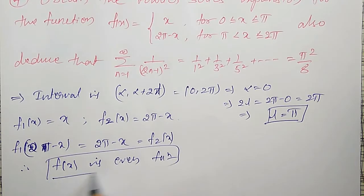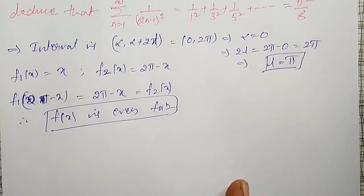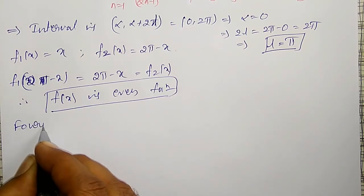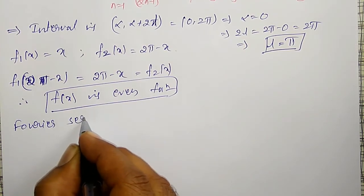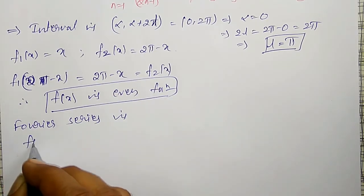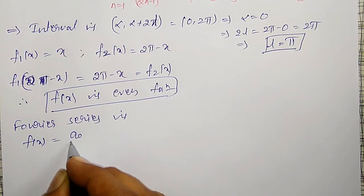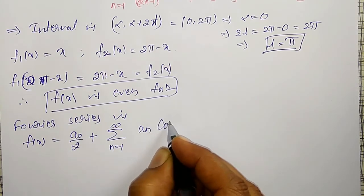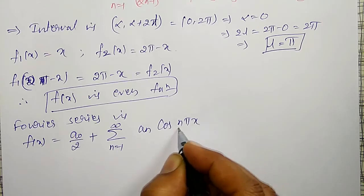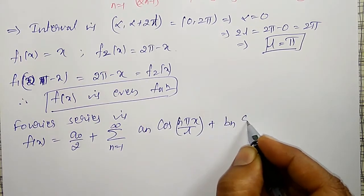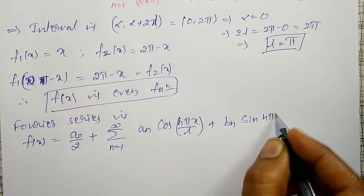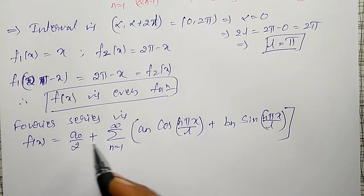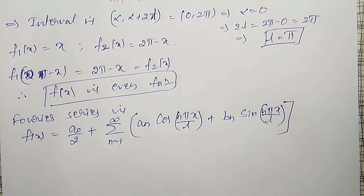If the function is even, then the bₙ Fourier coefficient will become 0. The Fourier series is f(x) = a₀/2 + summation n=1 to infinity of aₙ cos(nπx/l) + bₙ sin(nπx/l). The Fourier coefficients a₀, aₙ, and bₙ have to be calculated.